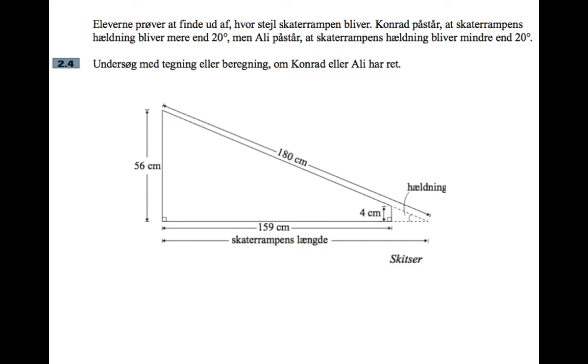Then we've got the pupils are trying to figure out how steep the skater ramp will be. Conrad is claiming that the skater ramp's gradient or steepness will be more than 20 degrees, but Ali is claiming that the skater ramp's gradient will be less than 20 degrees. Investigate with a drawing or a calculation whether Conrad or Ali are right. Then you've got a helpful diagram here illustrating the situation. So the angle shown here in the bottom right is the one we're trying to figure out.